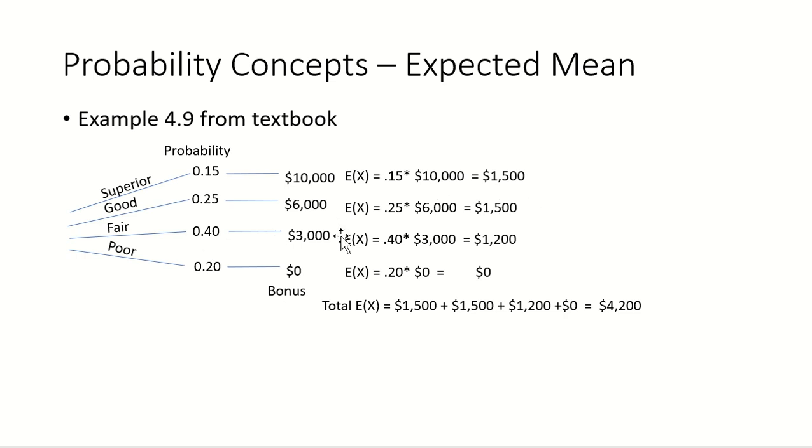40% are going to get $3,000. 0.4 times $3,000 is $1,200. And finally, 20% are going to get nothing. So the expected mean, the expected average bonus that people are going to get based on these probabilities is $1,500 plus $1,500 plus $1,200 plus $0. The average bonus should be $4,200.